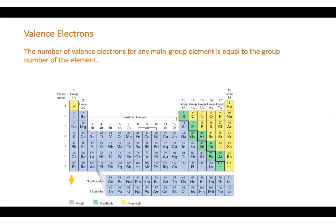The first thing we need for drawing the Lewis structure of elements is to know the number of valence electrons for any main group element. The number of valence electrons in the main group elements equals the group number ending with capital A. So group 1A has one valence electron, group 2A has two valence electrons, group 3A has three valence electrons, and group 8A has eight valence electrons.